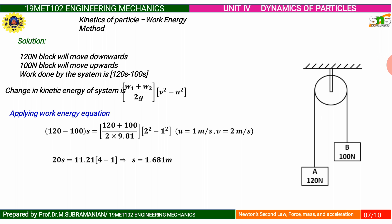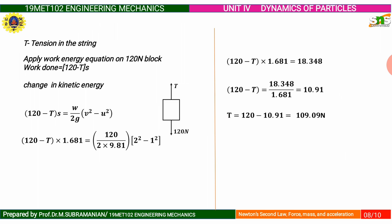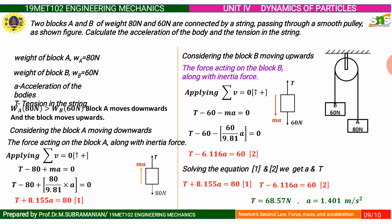To find the tension in the string, apply the work-energy equation to the 120 Newton block alone. Work done equals 120 minus T into S. From the free body diagram of the 120 Newton block, the change in kinetic energy equation is: 120 minus T into S equal to W divided by 2G into V squared minus U squared. Substituting values: 120 minus T into 1.681 equal to 120 divided by (2 into 9.81) into (2 squared minus 1 squared). From this, the tension T equals 109.09 Newton.